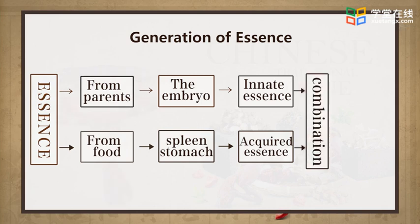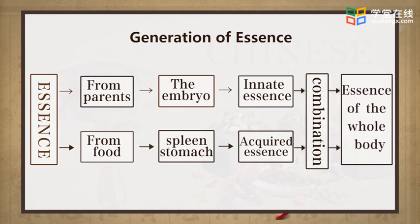Acquired essence refers to the refined material after birth, mainly the essence from food generated by the spleen and stomach, also known as food essence. The innate essence and acquired essence can combine to form the essence of the whole body, to be stored in the viscera. Innate essence and acquired essence have different sources, but they are interdependent. The innate essence is the premise for generation of acquired essence, while acquired essence can supply and enrich the innate essence.